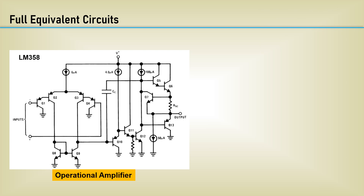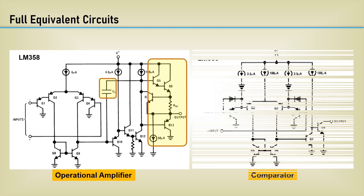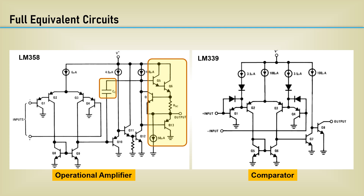Now let's unveil the full equivalent circuits. The LM358 has a Miller capacitor, which gives the op amp its dominant pole compensation, and the output is push-pull. For the LM339 comparator, there is no Miller compensation, and the output has two common emitter stages with an open collector output — often called an uncommitted output. It's very common for comparator outputs to be uncommitted, so they can be pulled up to suit any logic level required. Also notice the addition of two current sources, which the National literature says were added to smooth out the input bias current over the input voltage range.